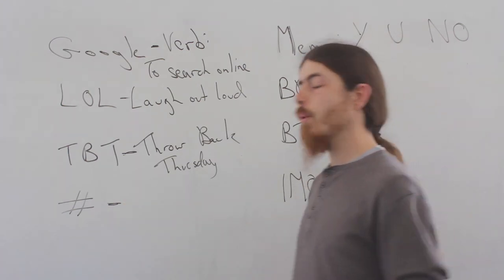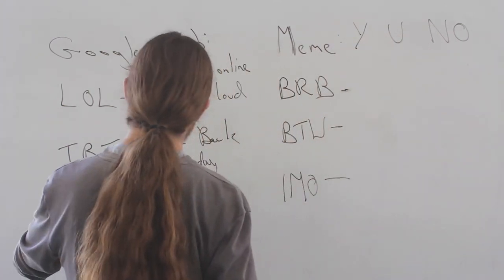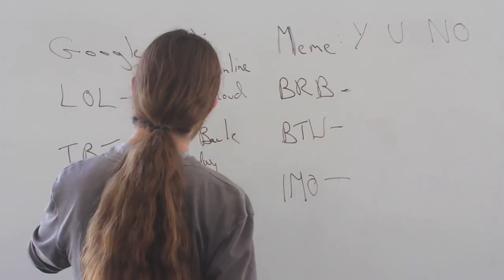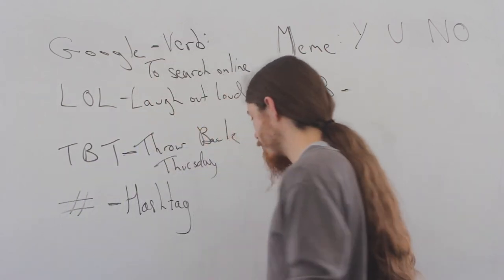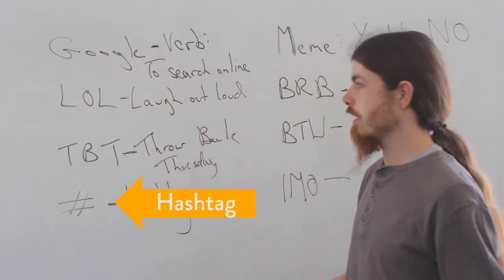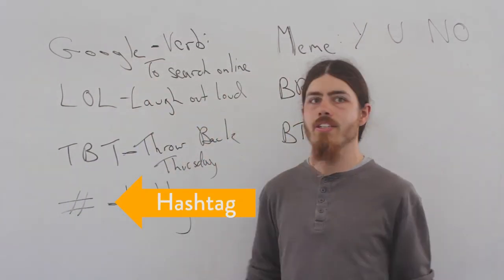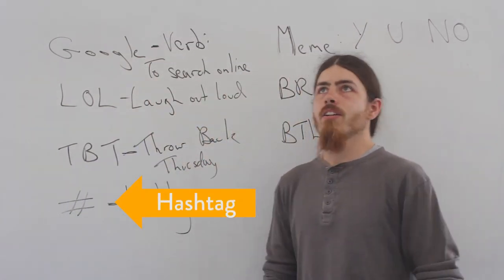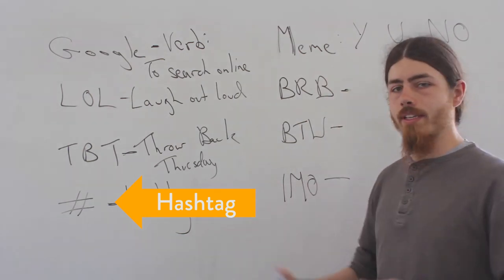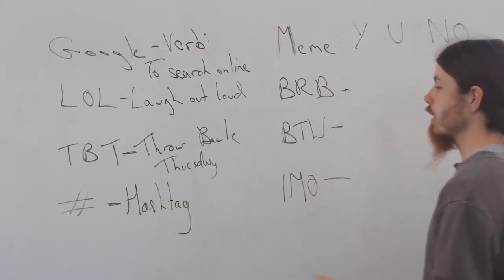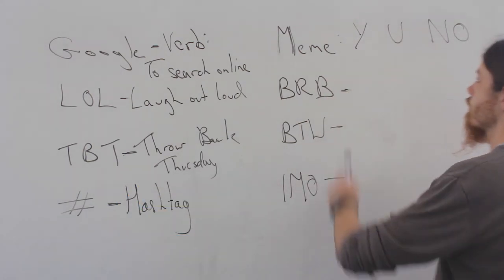Next we have hashtag, which we use on Twitter all the time. Hashtag this, hashtag squad goals, hashtag couple goals, hashtag everything — we can use it for any word in English.